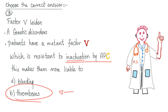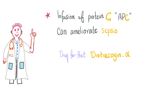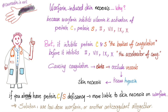Medicine makes so much sense once you understand it. Did you know that infusion of protein C can ameliorate sepsis? We have a medication for this called drotrecogin alpha. Have you heard of warfarin-induced skin necrosis? The mechanism of action of warfarin is that it inhibits vitamin K activation — specifically the vitamin K-dependent gamma carboxylation of protein C, protein S, protein Z, and factors 2, 7, 9, and 10.